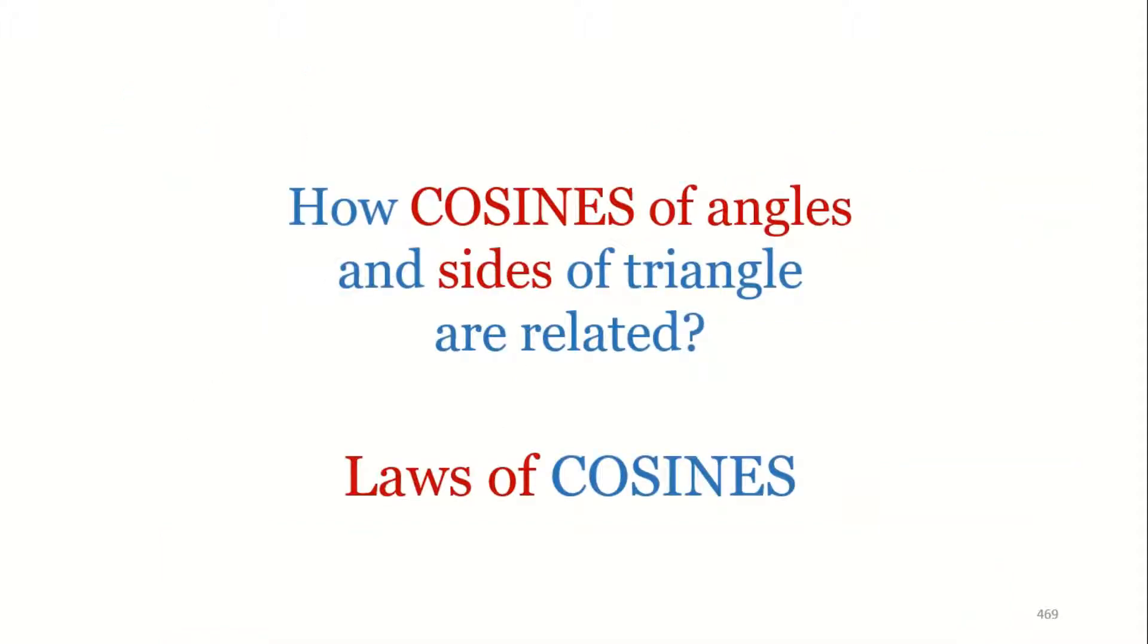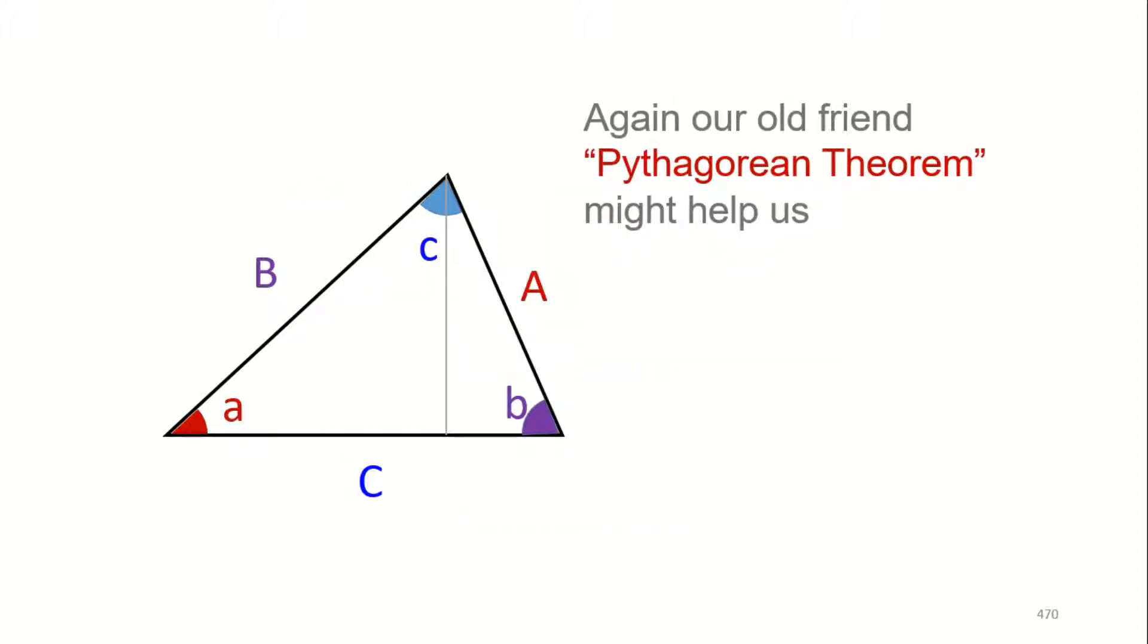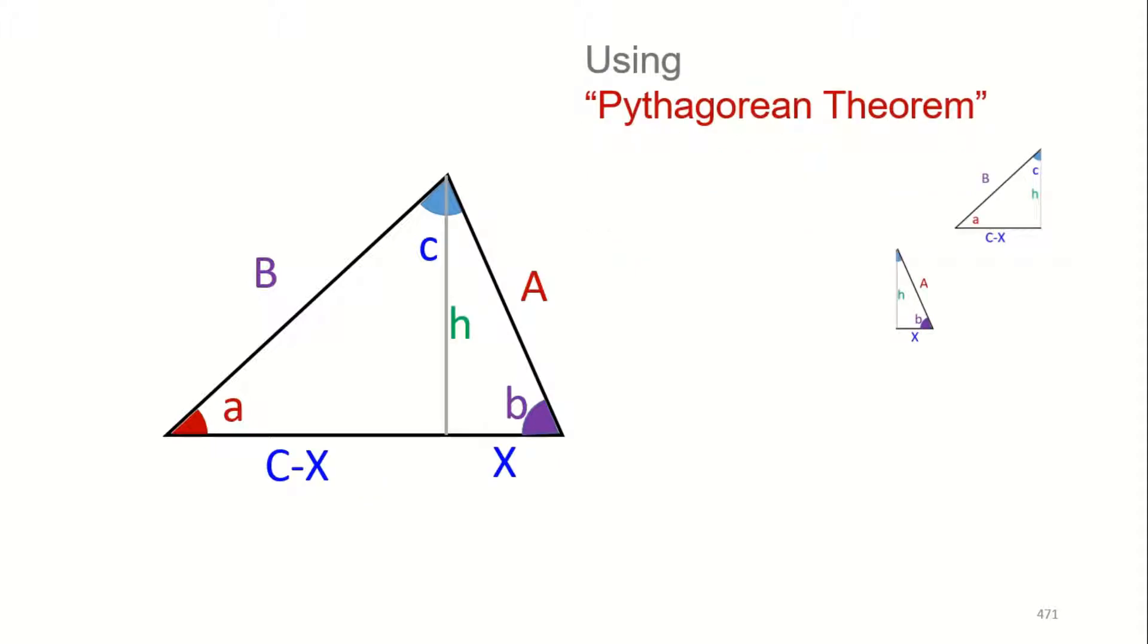So now we go to cosines, how they are related, and we will call it Law of Cosines. Simple Pythagorean theorem, but Pythagorean, which is our old friend, will help us. We have a triangle ABC and we can use Pythagoras. Pythagoras only works for right angle triangles, so we draw a height to make a right angle.